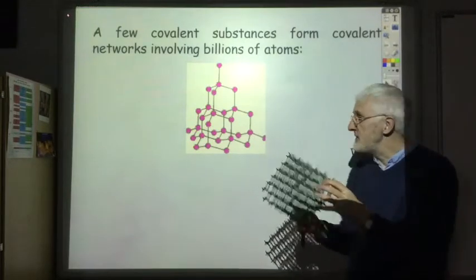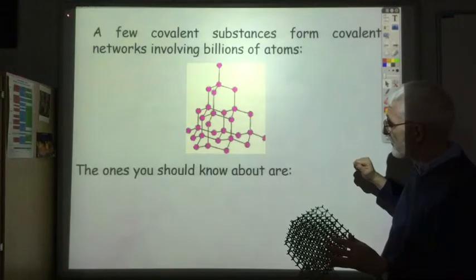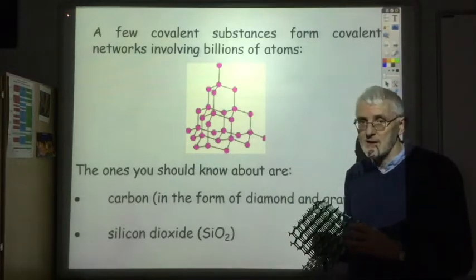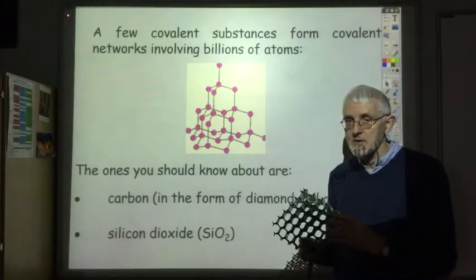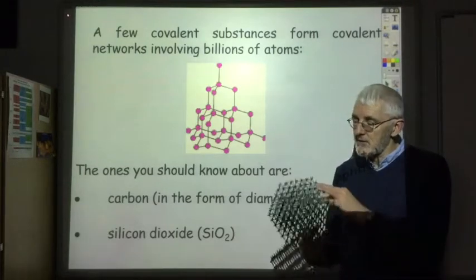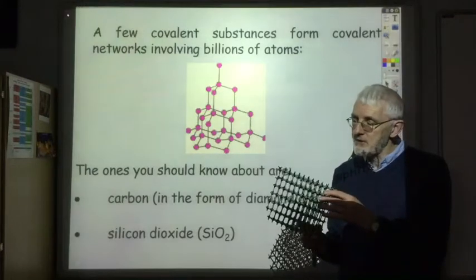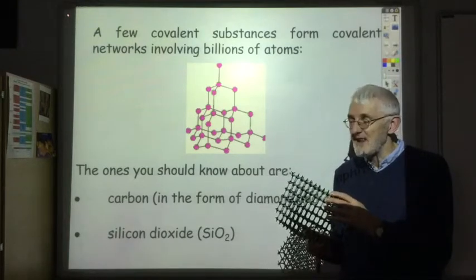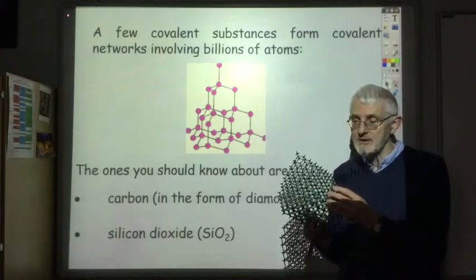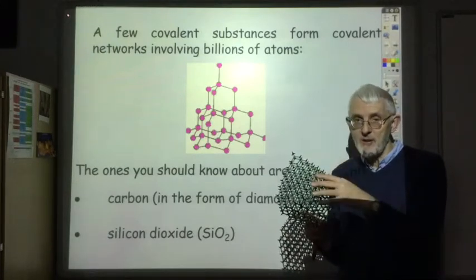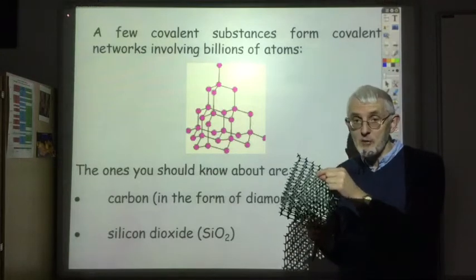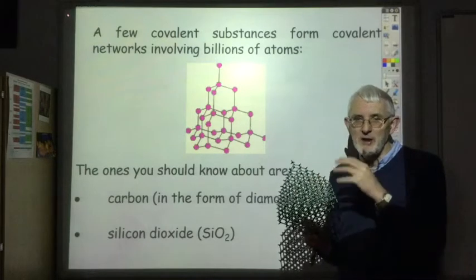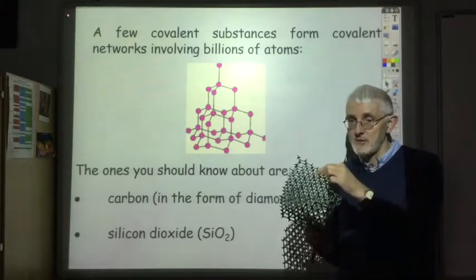The covalent networks you should know are carbon in the form of diamond or graphite, and silicon dioxide - you should recognise these as covalent networks. The most obvious property is that they differ from covalent molecules by having really high melting and boiling points, because in order to move the atoms apart you have to break really strong covalent bonds, not just weak intermolecular forces.